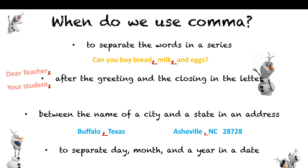And the last one: we use a comma in the date. When you're writing the date, after the day of the week you will put a comma. Then you will put the month with the number. After that, you will put a comma. And the year is the last.